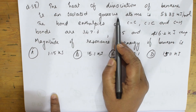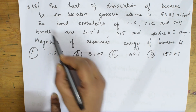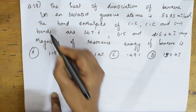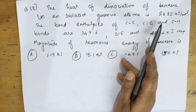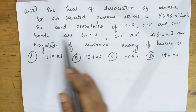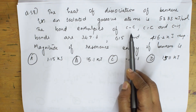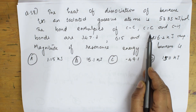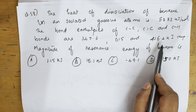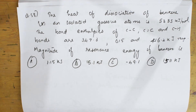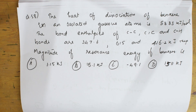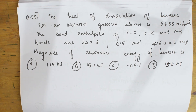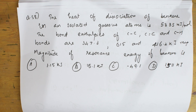The heat of dissociation of benzene into isolated gaseous atoms is 5,335 kilojoules per mole. The bond energies of C–C single bond, C=C double bond, and C–H bonds are given. We need to find the magnitude of resonance energy of benzene. First, we have to calculate the expected bond dissociation enthalpy of benzene.